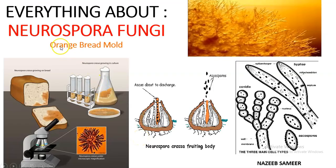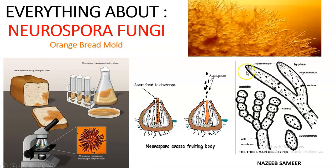Neurospora is a fungi known as orange bread mold. It is orange in color because of the presence of carotenoids in their body, and it is called bread mold because it infects bread. You can see that it is having a multicellular, multinucleated, and multi-pigmented thallus. Under the carotenoid family, we have many pigments, and those are found here.